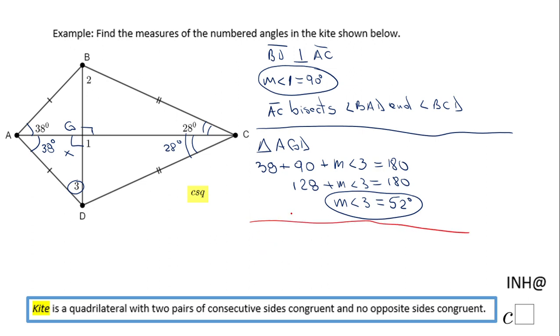Now for angle 2, be careful that angle 2 is not congruent to angle 3. Angle 2 is in triangle BGC, and the sum of the interior angles of that triangle is also 180. So we have 28 plus 90 plus the measure of angle 2 equals 180. That's 118 plus the measure of angle 2 equals 180. So the measure of angle 2 is 180 minus 118, which is 62 degrees.